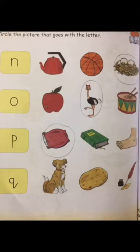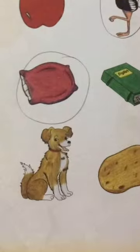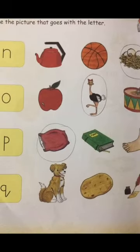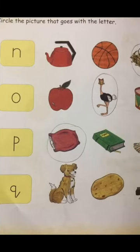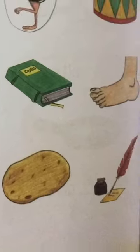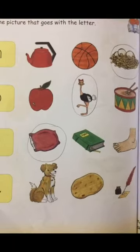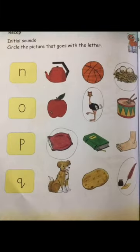The next letter is Q. Pictures hain: dog — D, iski sound nahi milti. Potato — no, iski bhi sound nahi milti. The next one is quill — par ka qalam. Iski sound Q se mil rahi hai na, so you have to circle the quill. Yahan par saari pictures jo word ki sound ke saath match kar rahi thin, unko circle kar diya hai.